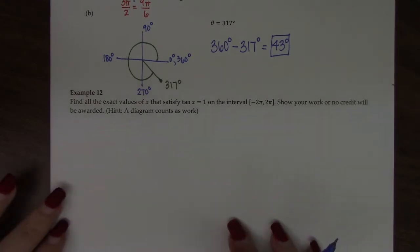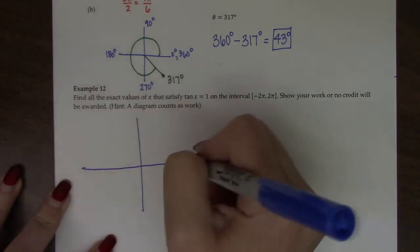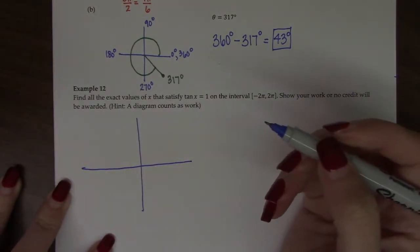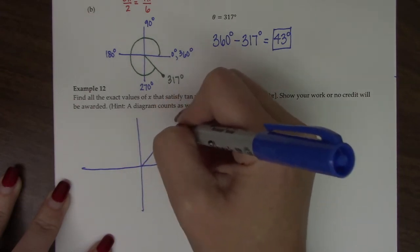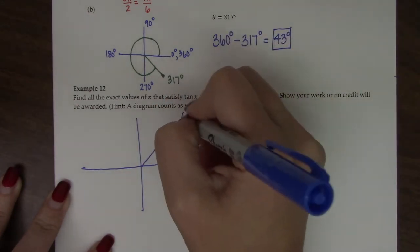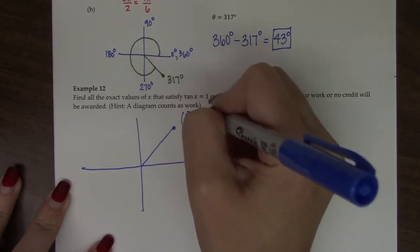So if I'm looking at my xy axis, I know on the unit circle that tangent is positive 1 in quadrant 1, when sine and cosine are the same.